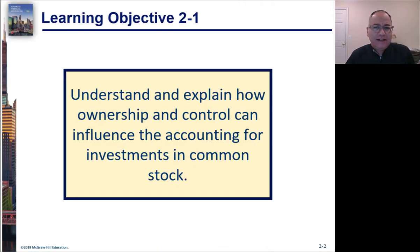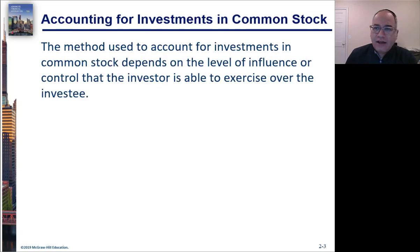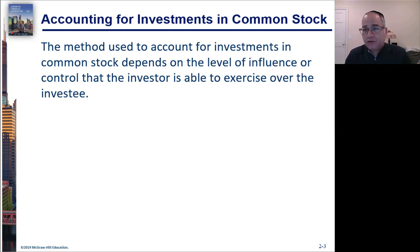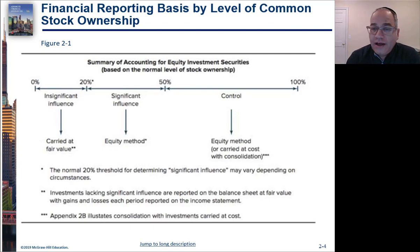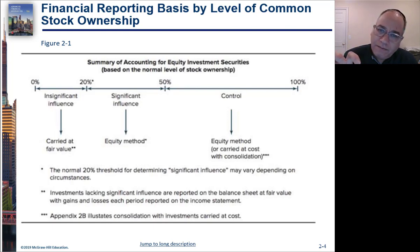Learning Objective 2-1: Understand and explain how ownership and control can influence the accounting for investments in common stock. There are different ways to account for investments — primarily the fair value method and the equity method. How you account for investments depends on how much control you have. If you have no control, you use fair value; if you have significant influence, you use the equity method; and if you have control, you consolidate.